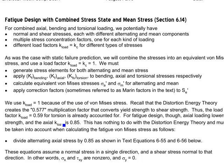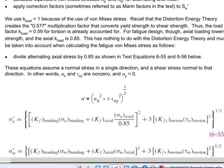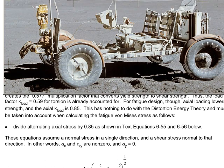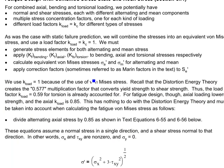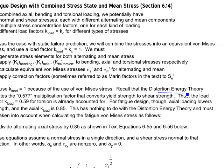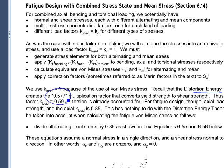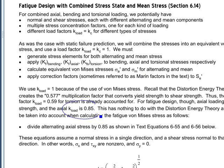We'll be dealing with different types of loading — axial, torsional, and bending. If we have a combined stress state, we need to find an equivalent von Mises stress. For bending, we use a load factor of 1. For torsion, we can use a load factor of 0.59, or using distortion energy, multiply the yield strength by 0.577 to get shear strength. For axial loading, we use a load factor of 0.85.